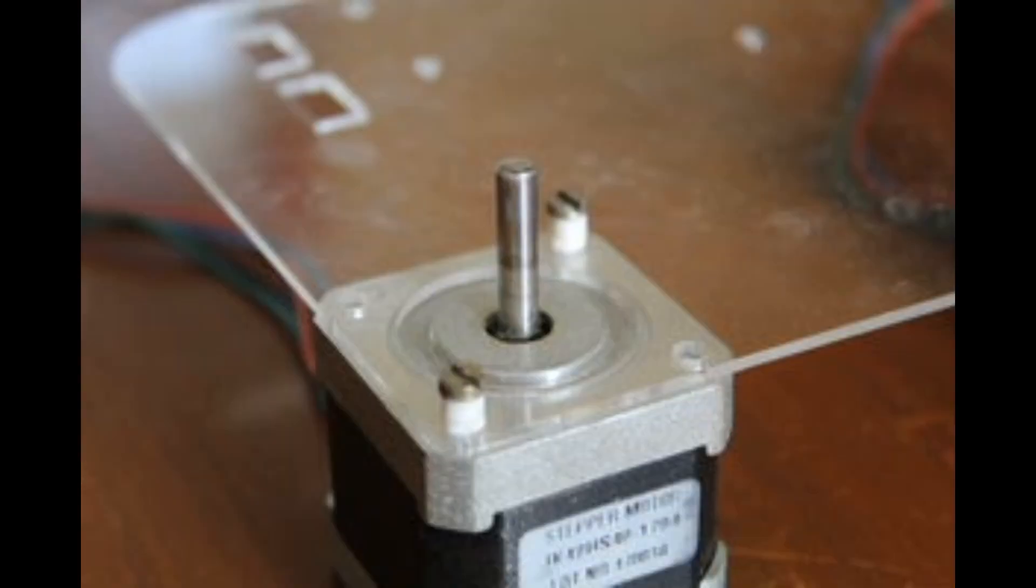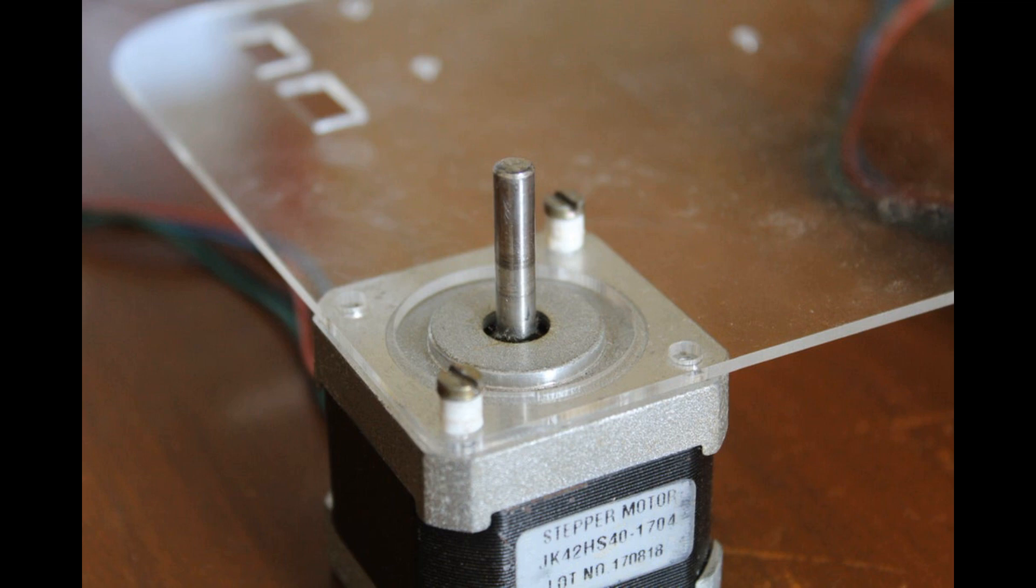Once the arms are joined, mount the stepper motors onto the stepper motor plate using M3 bolts. Next, attach the circular pieces onto the shafts of the two stepper motors. If the fit is tight, sand the inner surface of the hole till the circular piece fits onto the shaft.